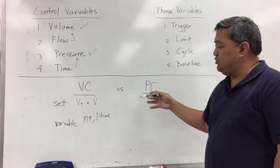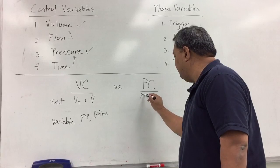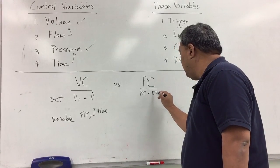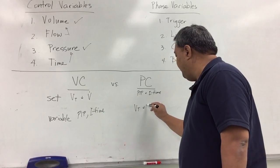On pressure control, you're just going to flip the two. So the set here is your PIP and I time. And the variable will be your volume and flow.